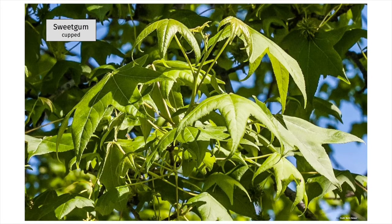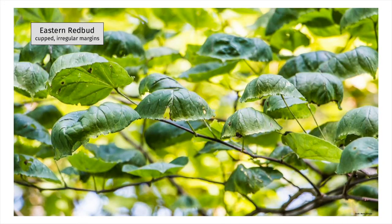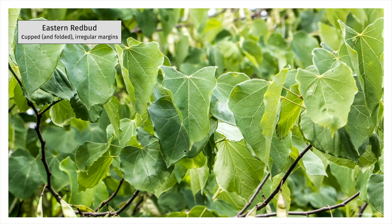Now let's look at leaf symptoms in trees. This sweetgum is showing moderate cupping and drooping. Symptoms can vary in severity between species, within species, between locations, or even at the same location. This redbud has noticeably curled or cupped leaves — the leaves are cupping up, and some are also starting to show scalloping or irregular margins. Here is an example of downward cupping in redbud. It is worth noting that trees will typically hang on to injuries throughout the growing season, whereas symptoms may become less severe in some herbaceous plants later in the growing season.